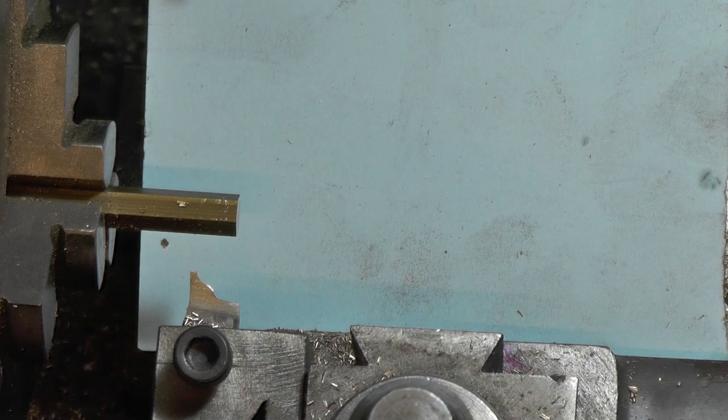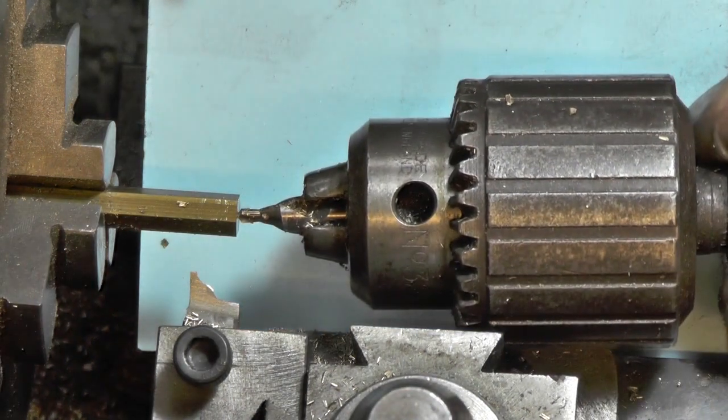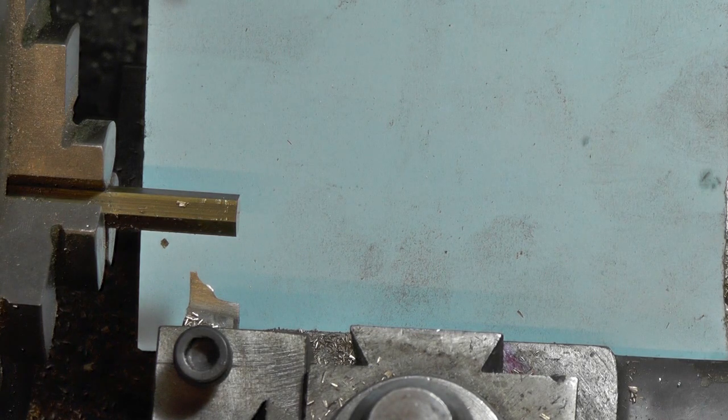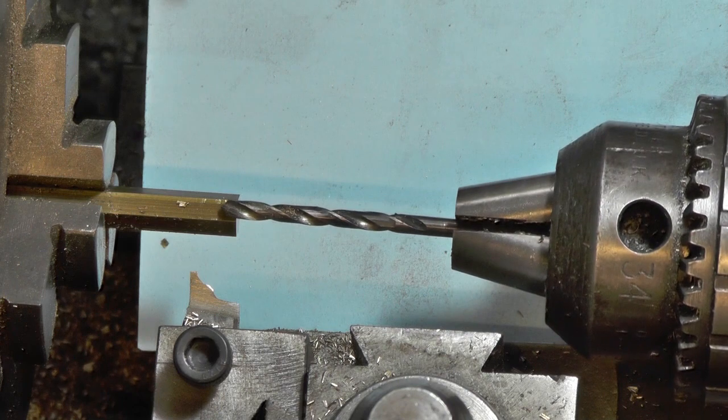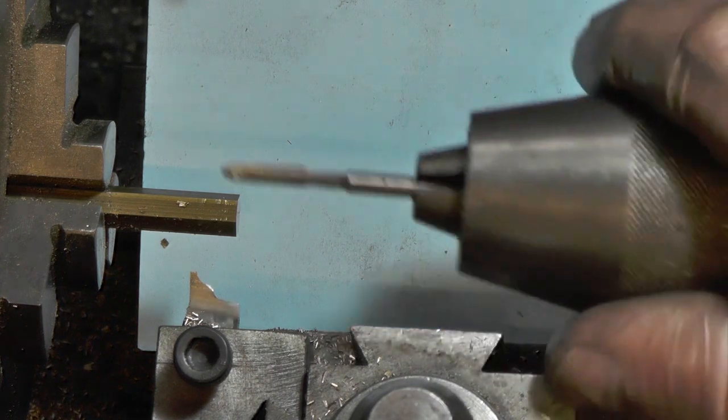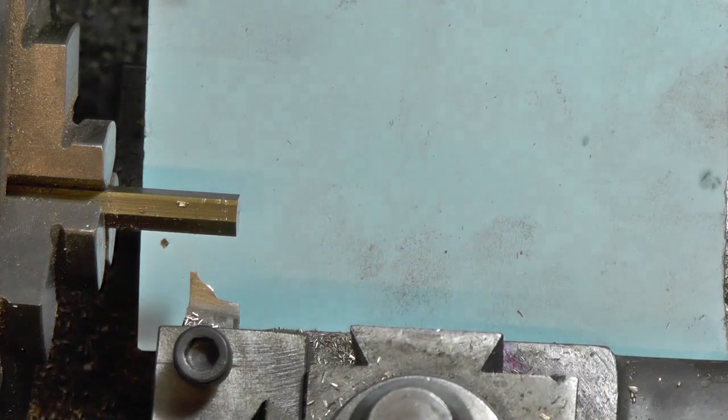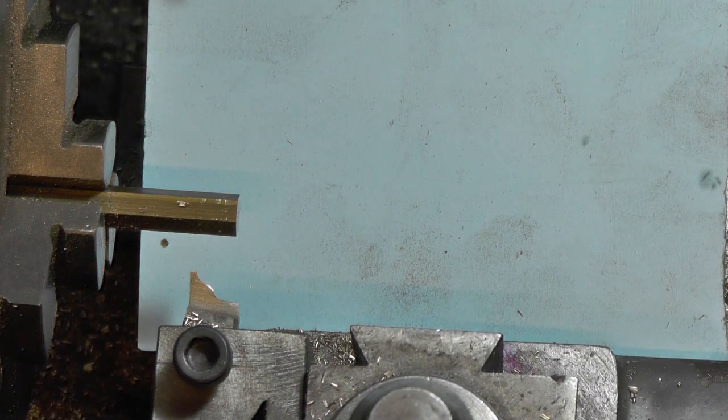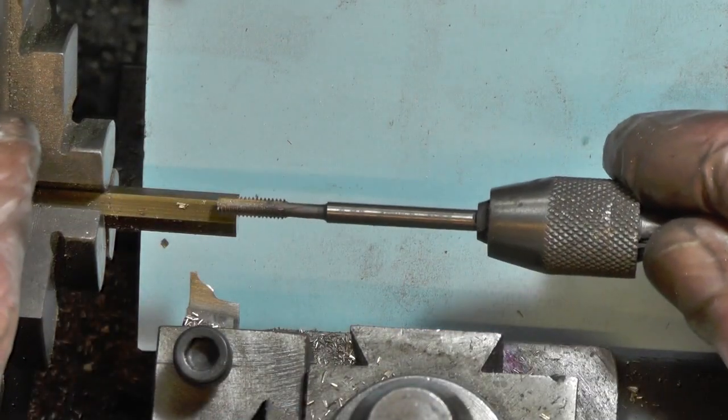So what I'm going to be doing - I'm going to center drill it, that's number one operation. Then I'll go in with a tapping drill for 4BA which is 1/8th to a quarter deep, that's number two. Then I'm going to go in with a second tap as far as that will go, that's number three. Then I'm going to bottom it out with this bottoming tap to get to the bottom of the blind hole, that's number four.